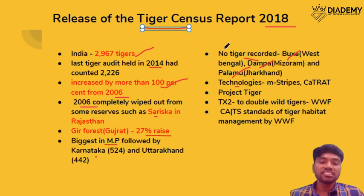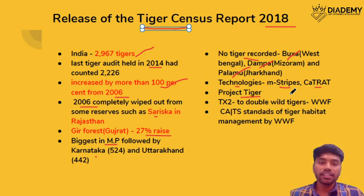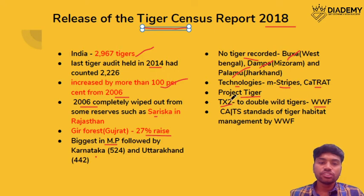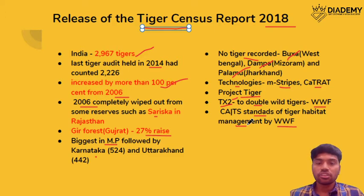Technologies used for the tiger census include M-strips and camera traps. There is also Project Tiger for conservation of tigers, which has its origin in the Wildlife Protection Act 1972. Another initiative by WWF is called TX2, which aims at doubling the wild tiger population. WWF has also given a standard that evaluates how tiger habitat management is being done by particular nations or governments — remember it as 'Simply Cats.'